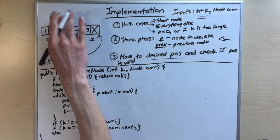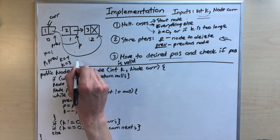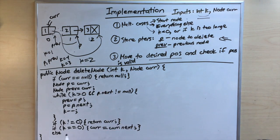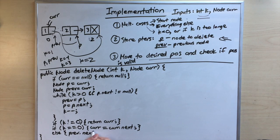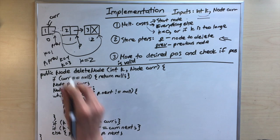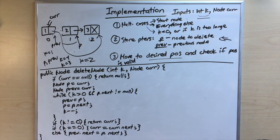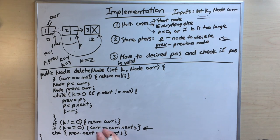Otherwise, we set prev.next equal to p.next, which skips the target node. At the end, cur always points to the first node in the linked list, and we return cur.